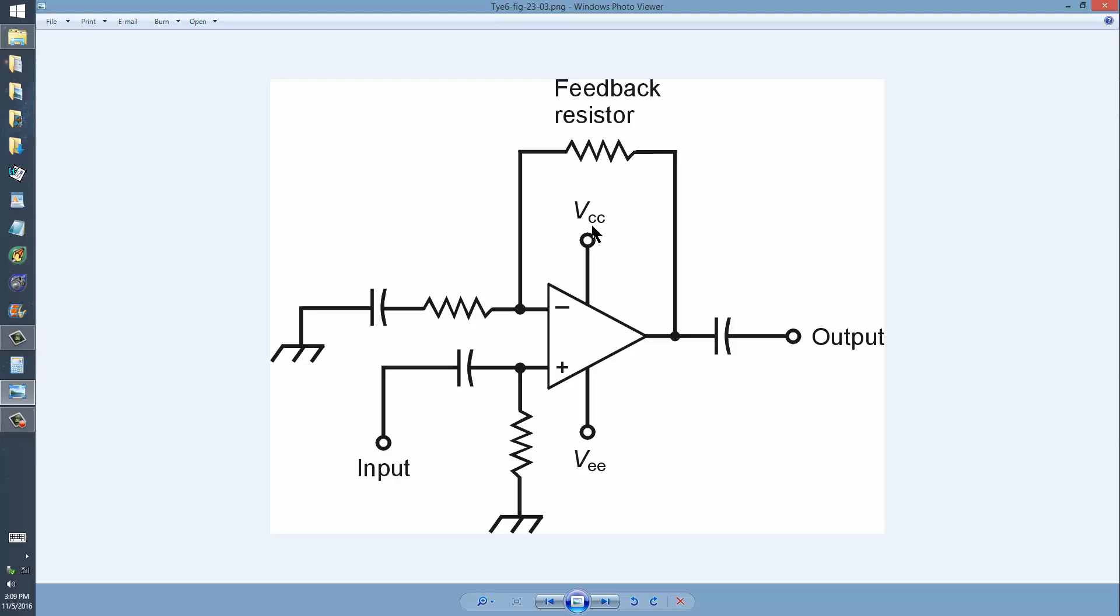V sub CC simply refers to the power supply voltage provided to the collectors of the bipolar transistors, and V sub EE indicates the voltages on the emitters, or the voltage supplied to the emitters of the bipolar transistors, which comprise the integrated circuit. It's really a very simple circuit inside of here, but it's a lot simpler to just indicate an operational amplifier symbol. It saves a lot of space and a lot of confusion.